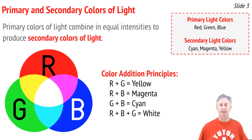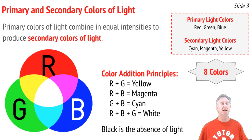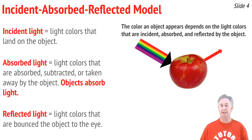If you mix all three in equal intensities, you get white light. So there are seven colors. There's an eighth color — black — which is simply the absence of all light. So eight colors in all. We want to keep it simple and explain as much as we can with a simplified model that works with eight colors and rules of color addition and color subtraction.